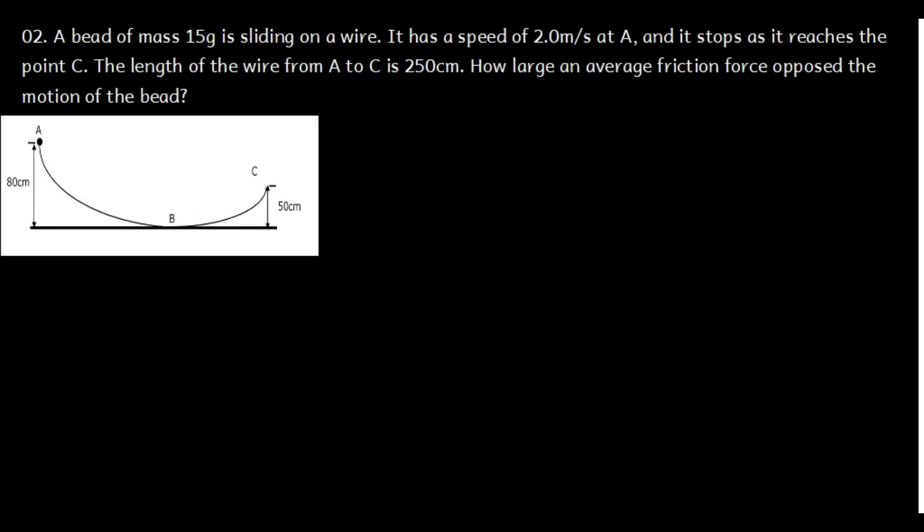Question 2. A bead of mass 15 grams is sliding on a wire. It has a speed of 2.0 meters per second at point A and it stops as it reaches point C. The length of the wire from A to C is 250 centimeters. How large an average friction force opposed the motion of the bead?